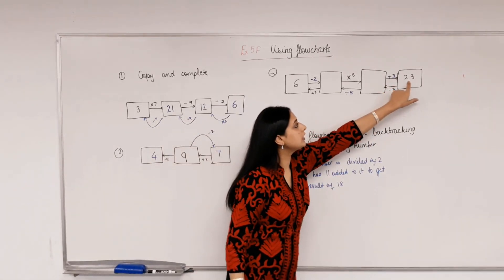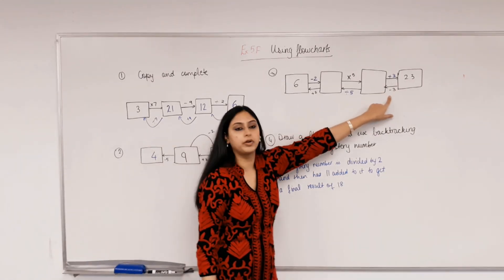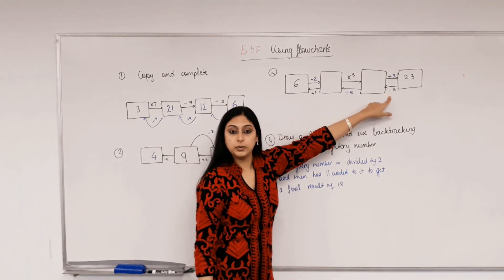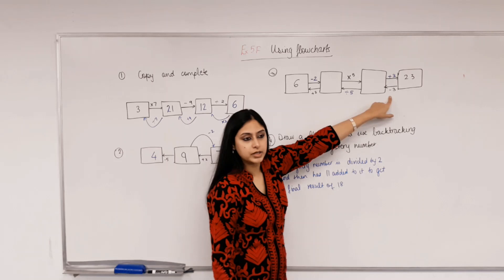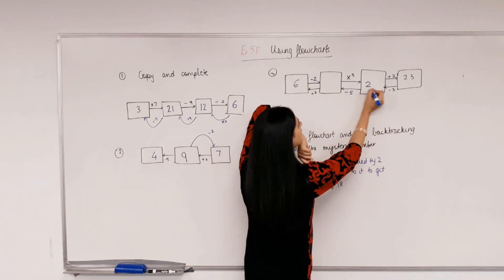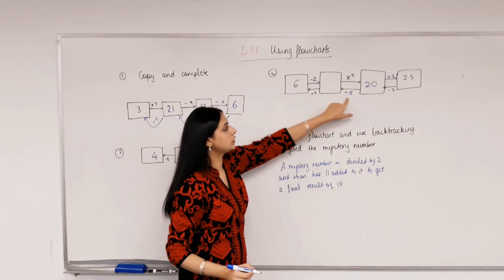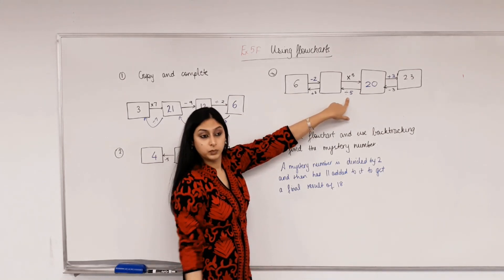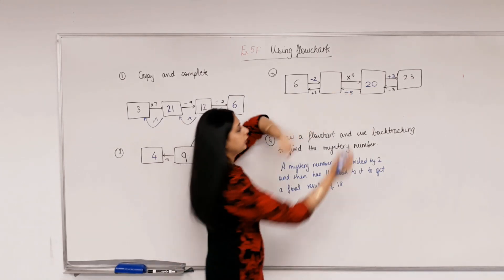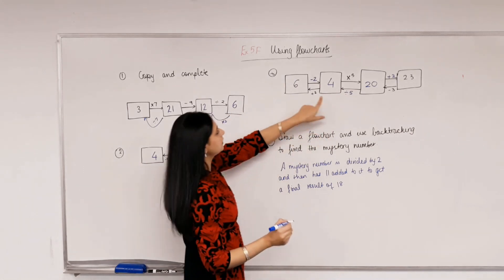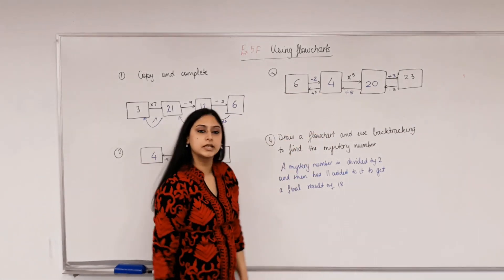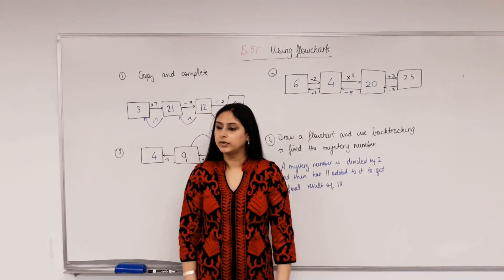Now, to go from 23 to here, what's the operation? Take away 3. 23 take away 3 is 20. From 20 to here, what's the operation? What's 20 divided by 5? 4. And then, does that make sense? 4 plus 2 is 6. Happy? Okay.